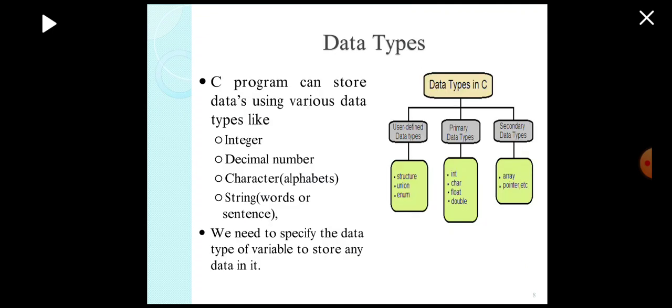Next topic is data types, which is an important topic. Now, C program can store data using various data types like integer, decimal number, characters, and strings. Data type normally specifies the type and size of data that the variable is going to hold or store. We need to specify the data type of variable to store any data in it.